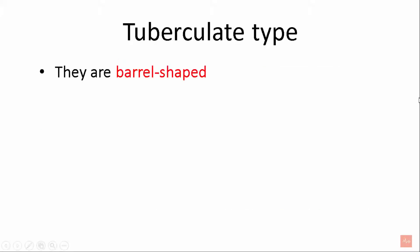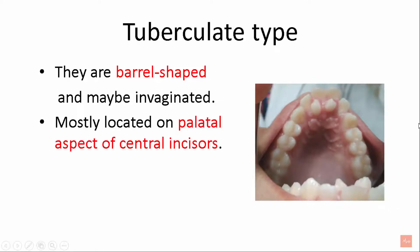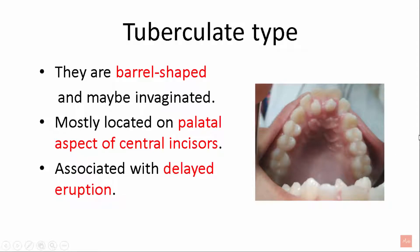Next is the tuberculate type. They are barrel-shaped and they may be invaginated. As you can see in this picture, these are tuberculate type. They are mostly located on the palatal aspect of the central incisors. It is associated with delayed eruption.